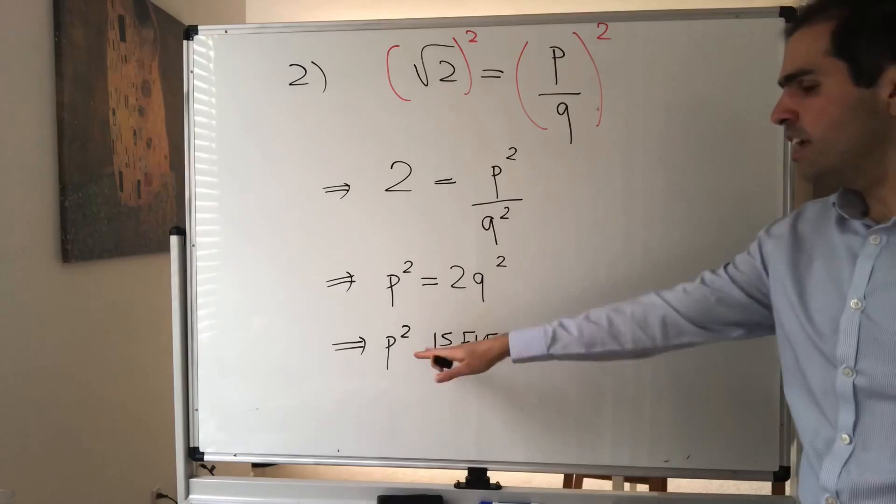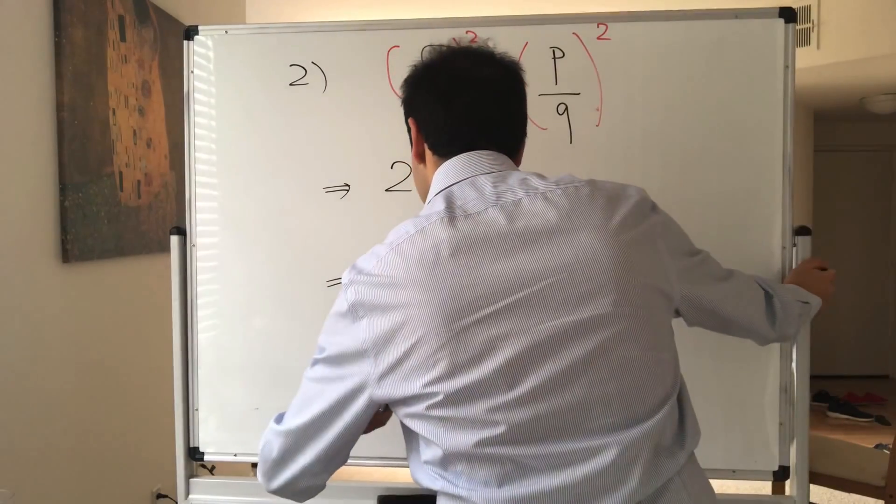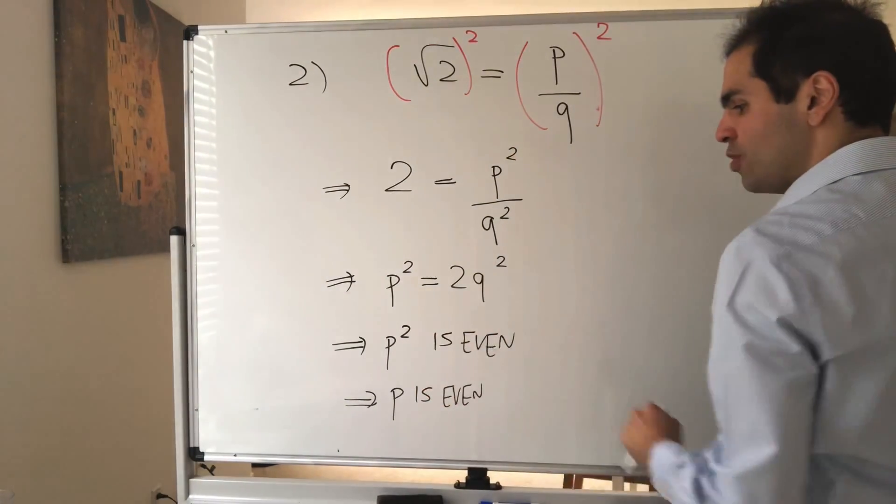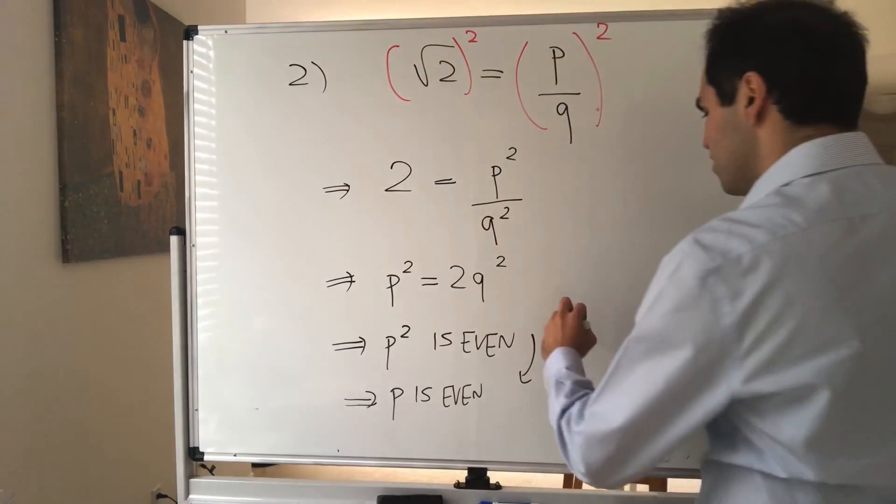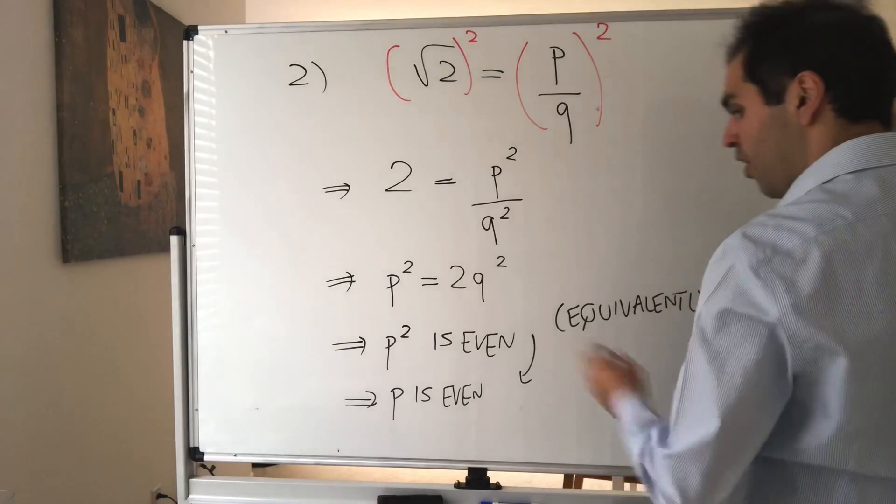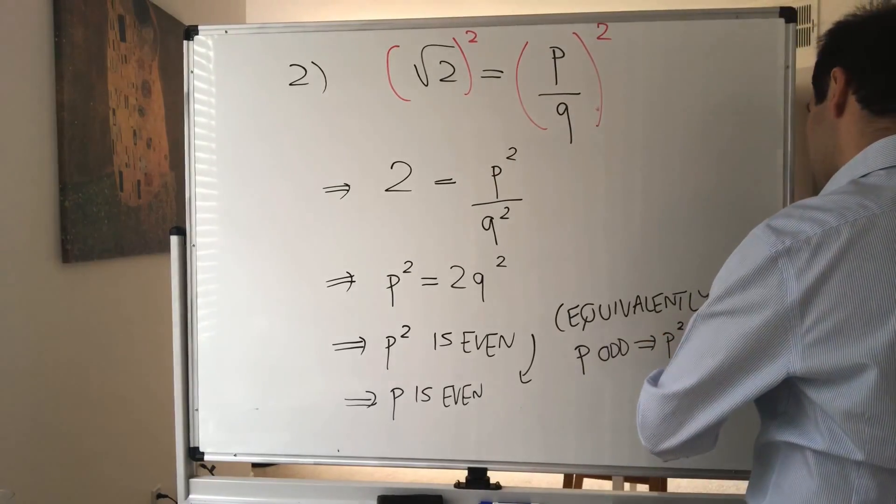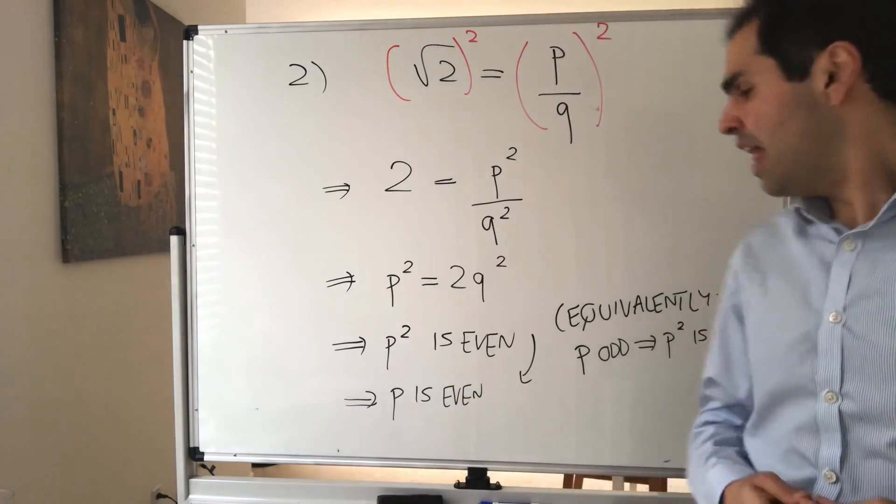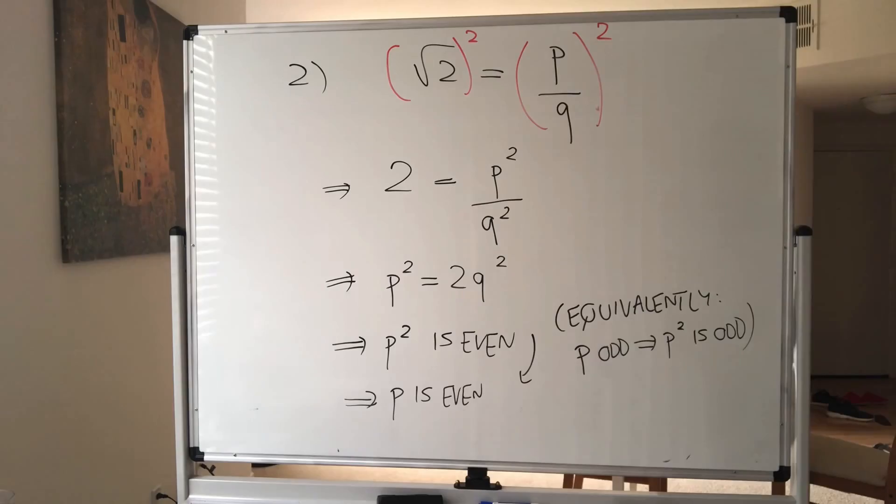And the cool thing is, if the square of an integer is even, then so is that integer itself. So therefore, p is even. And why is that true? Why is p squared even? Why does that imply p is even? Because of the contrapositive. So equivalently, all you need to show is that if p is odd, then p squared is odd. And this you can just show directly. So assume p is 2k plus 1 and show that p squared is also 2 something plus 1. So this we will take as given.